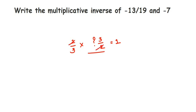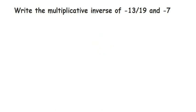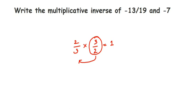The 2 and 3 will get cancelled and we get the answer 1. So multiplicative inverse is nothing but the reciprocal of the given number. To summarize: 2 by 3 multiplied by 3 by 2 equals 1, so 3 by 2 is the multiplicative inverse of 2 by 3. Similarly, 2 by 3 is the multiplicative inverse of 3 by 2 — it works both ways.